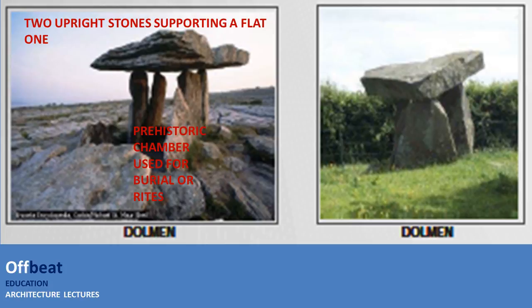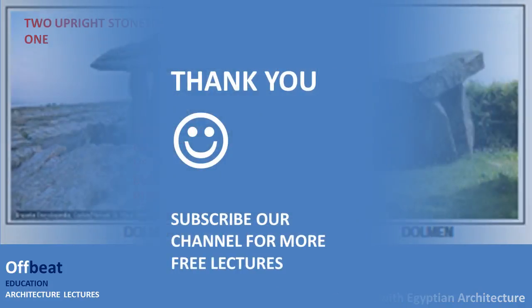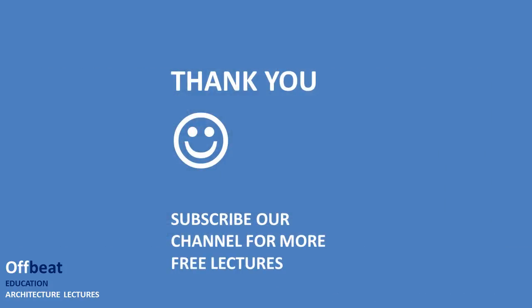So the three main types of prehistoric architecture are the Monolith, the Stonehenge, and the Dolmen. In the next lecture we will discuss Egyptian architecture. Please like and subscribe to our channel for more free lectures.